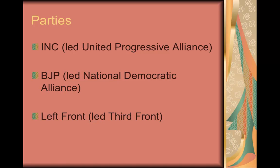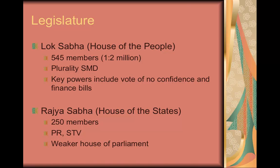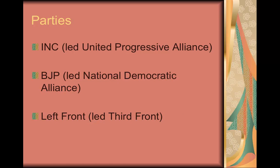Then there's a third front, which includes the former left front — the Communist Party of India Marxist and the other Communist Party of India. This is not a revolutionary group; they're much more social democratic. They gained 77 seats in the last elections and have actually been crucial to coalition governments. They're regionally based but strong in a few important states. They average about 7% to 10% of the national vote, which doesn't make them a force on their own, but they have been key to certain coalition governments.